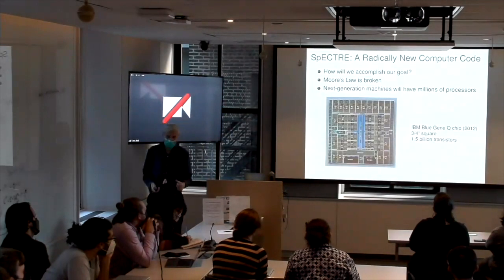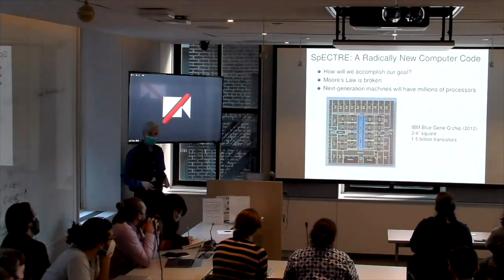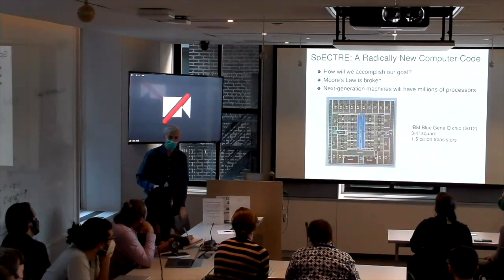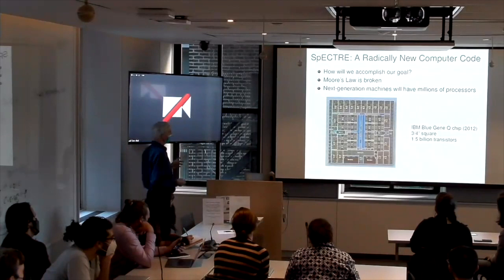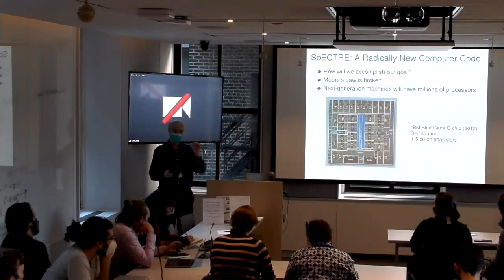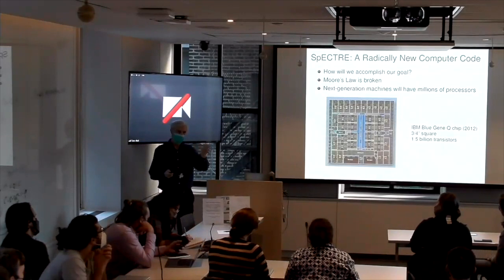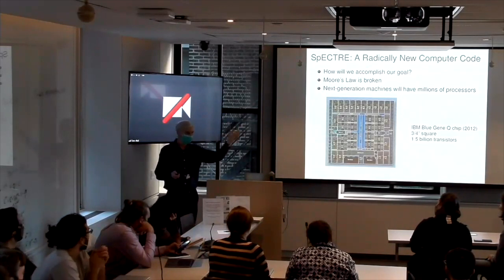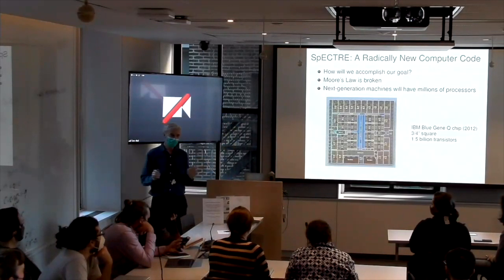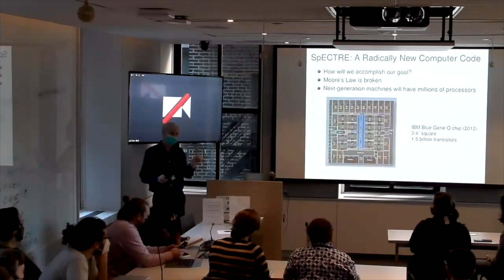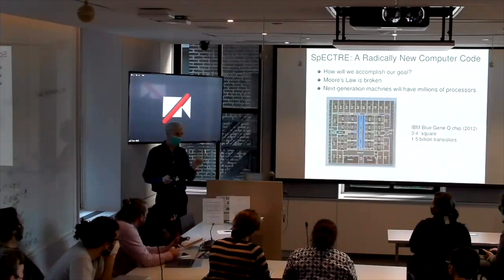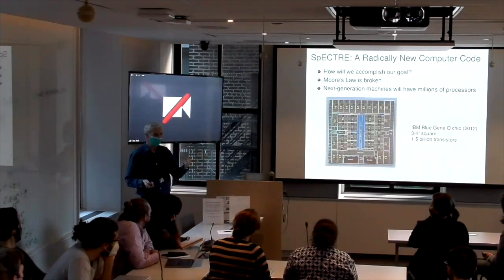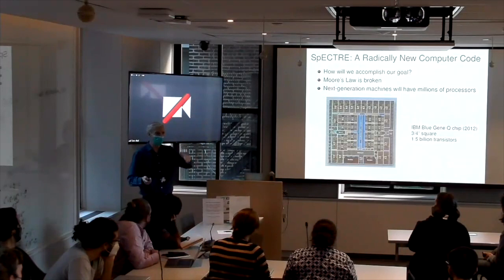So we have a new code, which we've called Spectre. Some movie makers paid us a lot of money to use this name. The key thing is Moore's Law is broken. Moore's Law in the, not actually as it was stated, but in the idea that the speed of processors doubles every 18 months or two years. Those days are over, right? The size of a transistor on a modern computer chip is a few dozen atoms, 50 atoms or something on a side.